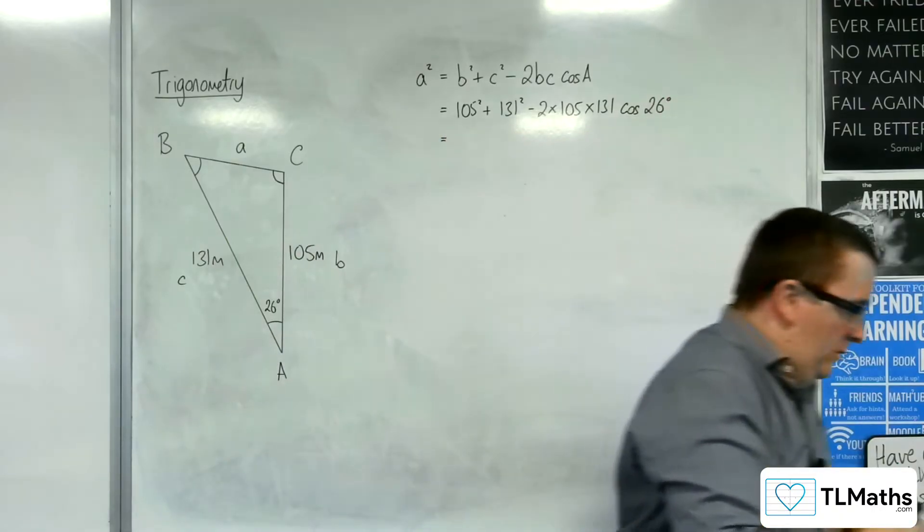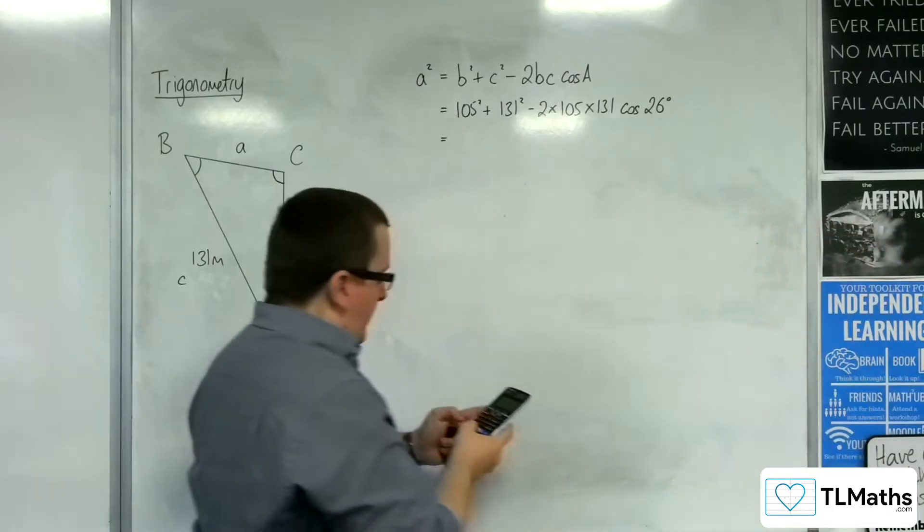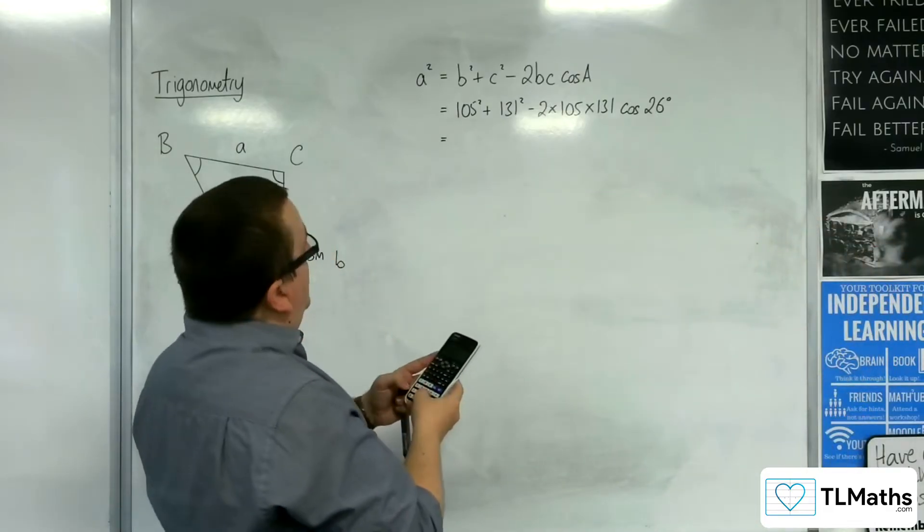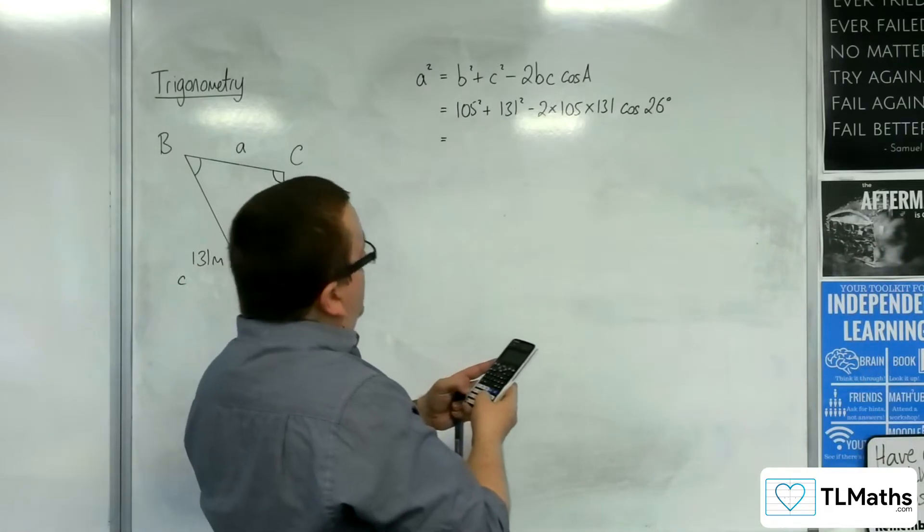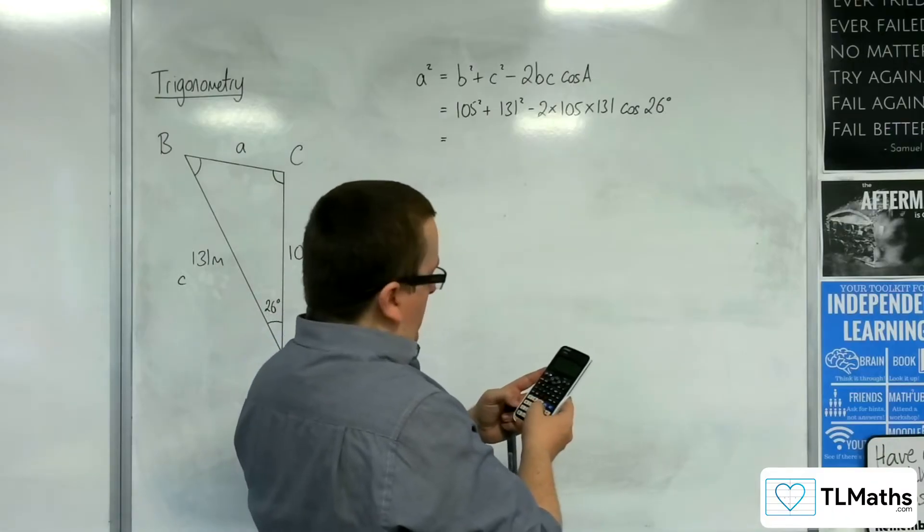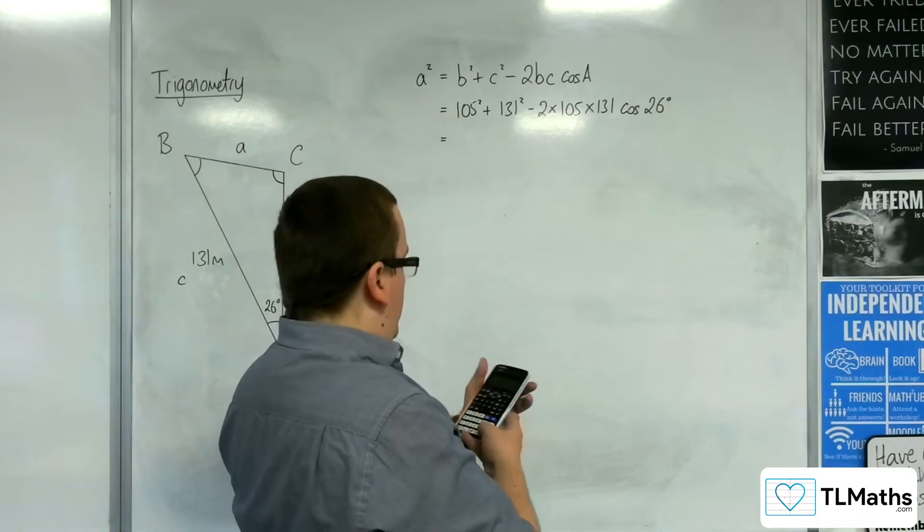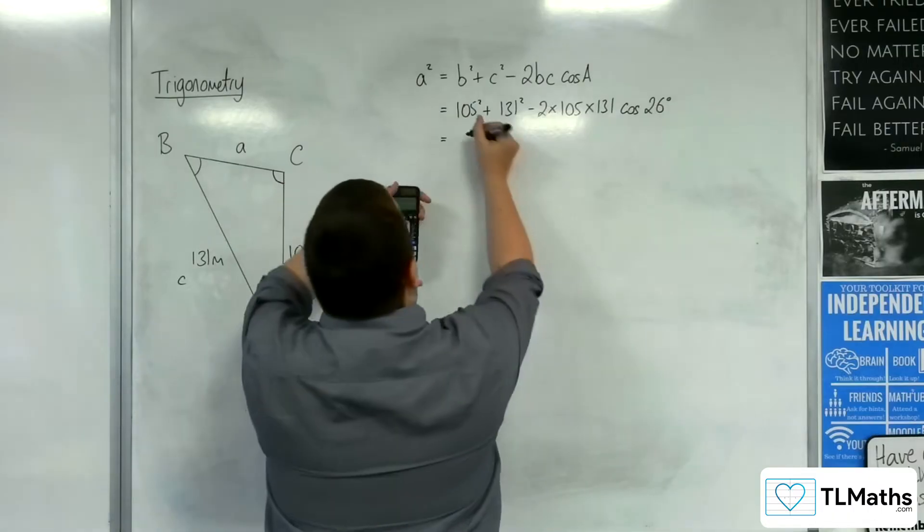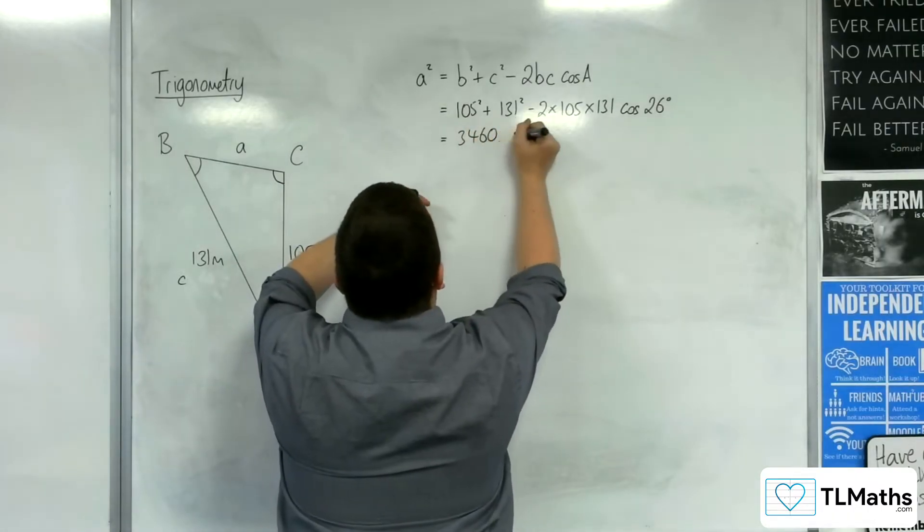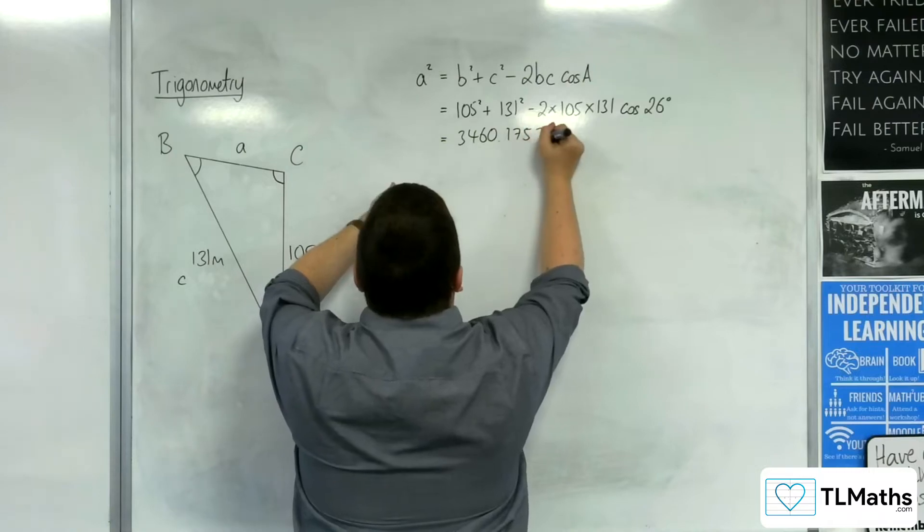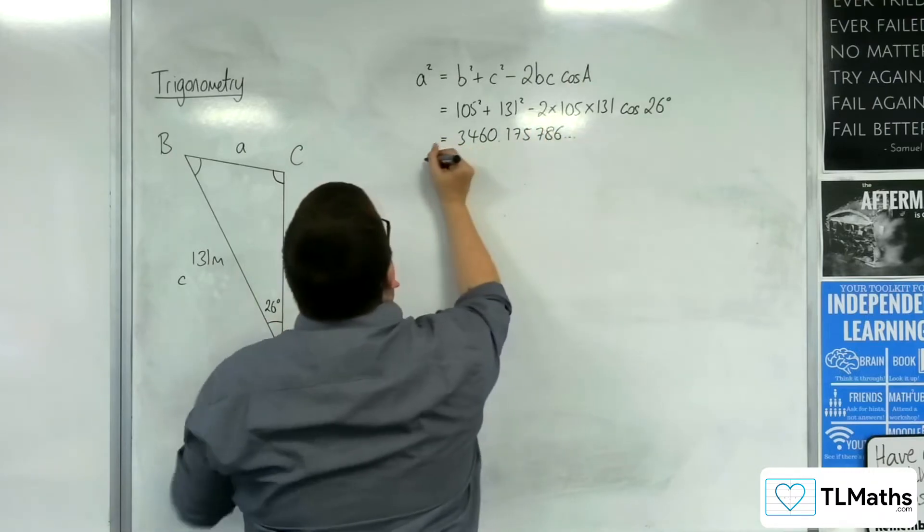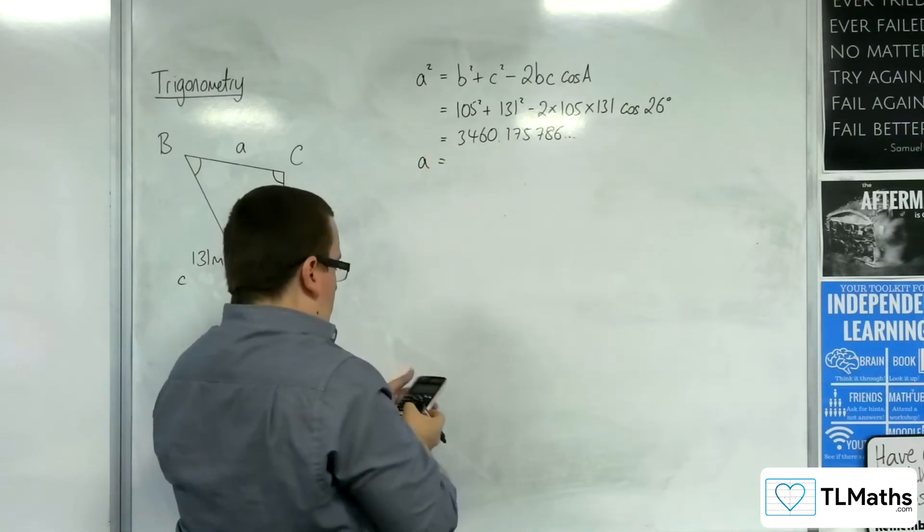Let's plug that into the calculator. 105 squared plus 131 squared, take away two lots of 105 times 131 times cosine of 26. So, that's 3460.175786, and then I want to square root that.